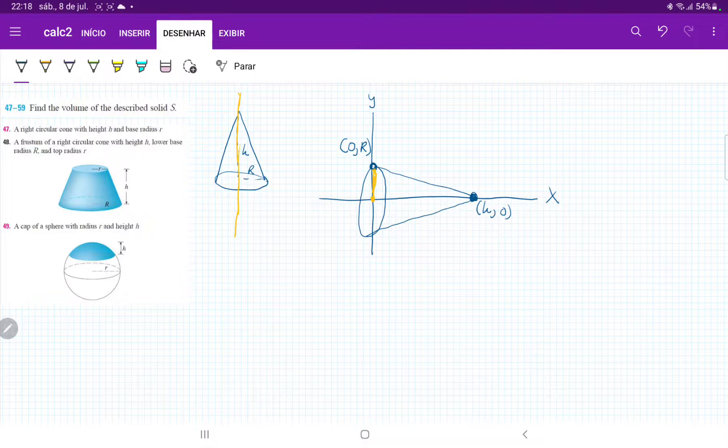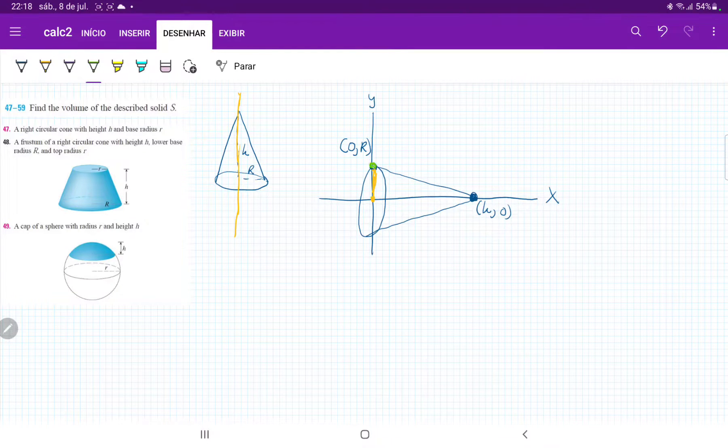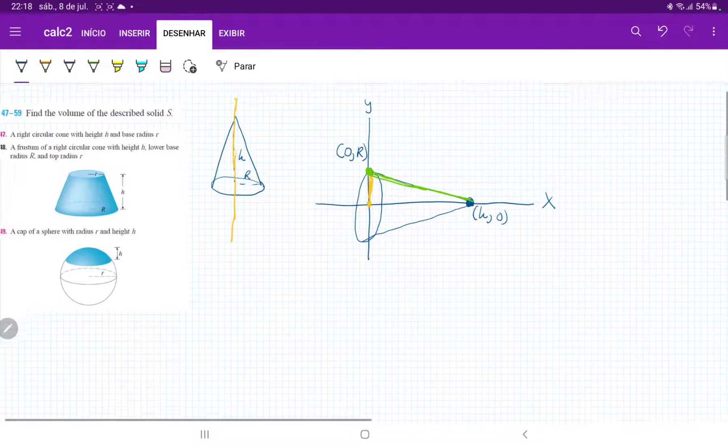So what we're going to do here is we're first going to find this curve that connects 0r and h0. So let's find an expression for that. And for this one, because it is a straight line,